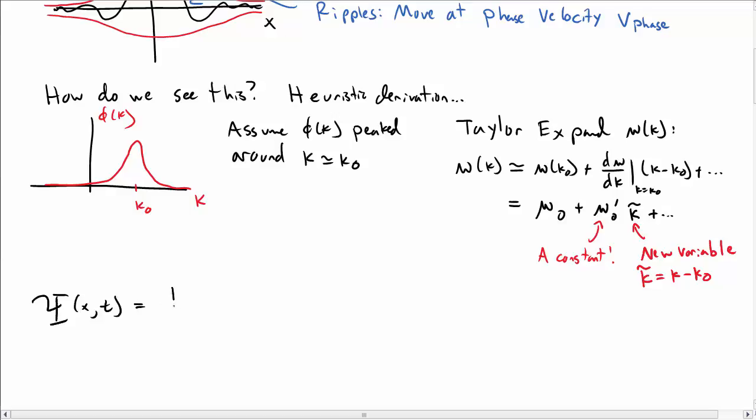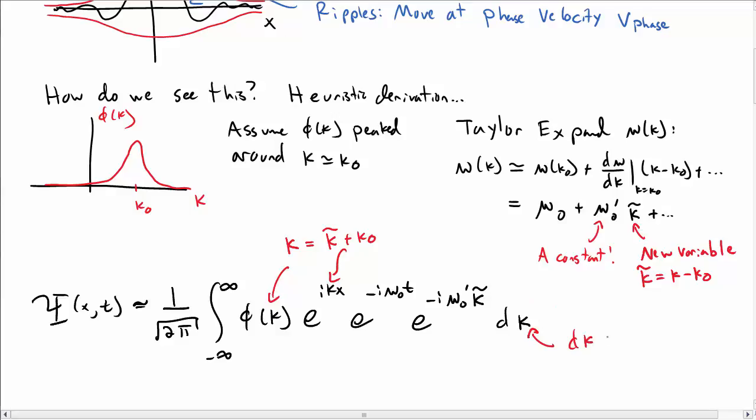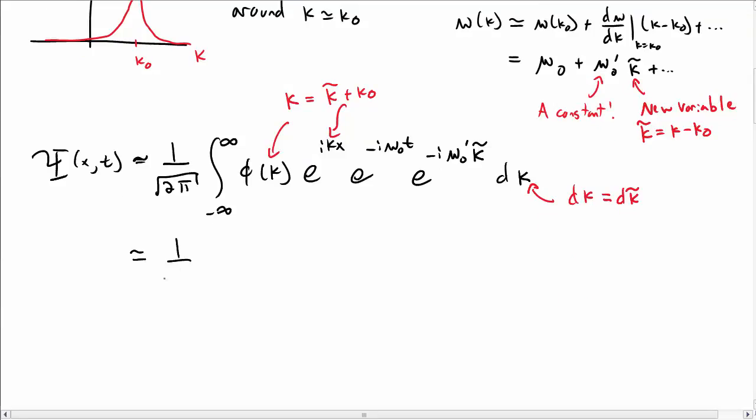Okay, so our total wave function capital psi as a function of x and t is then equal to the integral from negative infinity to infinity. Let's make an approximation near k equal to k0 for omega. So we have e^(ikx) e^(-i omega_0 t) e^(-i omega_0' k-twiddle t) integrated over k. We're going to write that k as k-twiddle plus k0, and dk is dk-twiddle because k0 is just a constant.